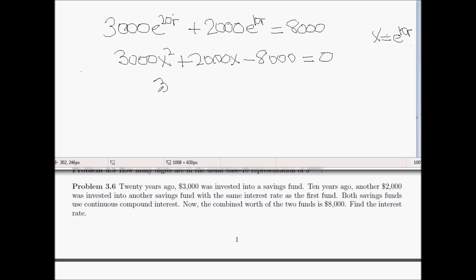Or dividing out the 1,000, 3x squared plus 2x minus 8 is equal to 0.